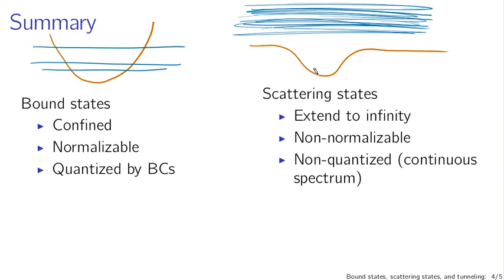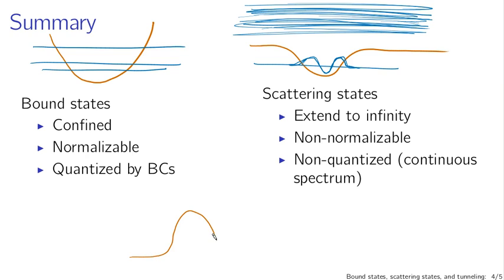It's even possible to have potentials that support both: a lower energy level might produce bound-state-like behavior, while a higher energy level gives scattering-state behavior — both for the same potential. Quantum tunneling occurs for barrier potentials where a particle classically lacks enough energy to pass through. Quantum mechanically, the allowed region includes even the barrier and extends on both sides, so that's bound states, scattering states, and tunneling.